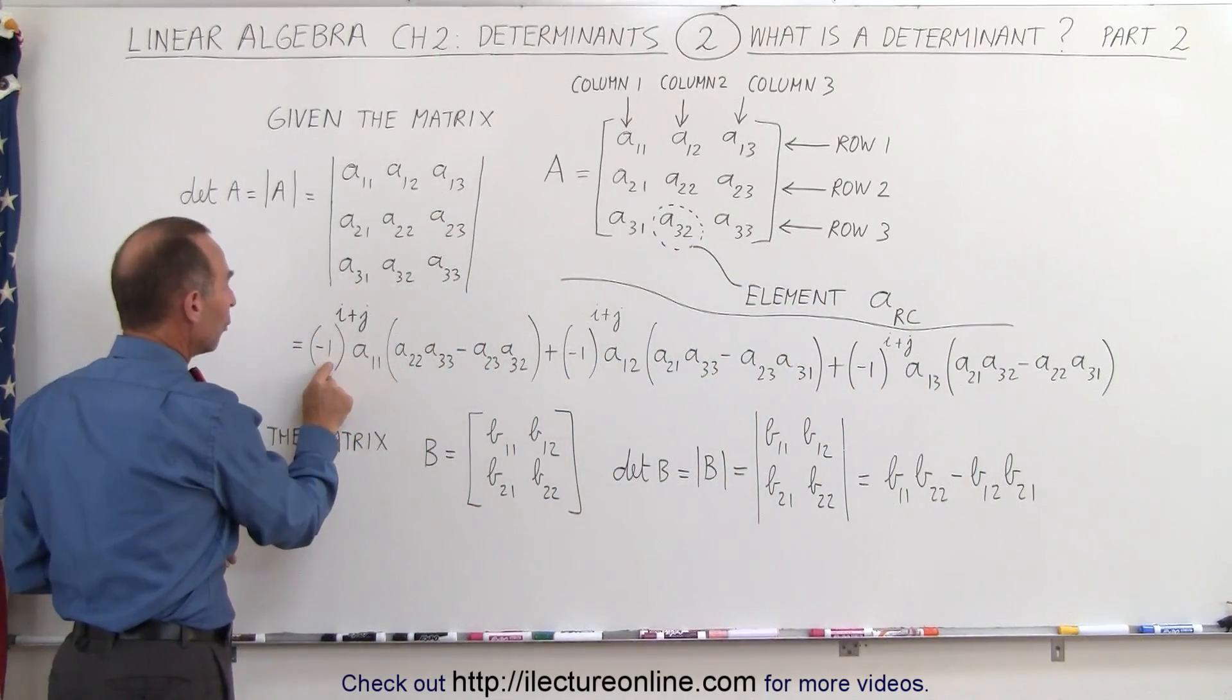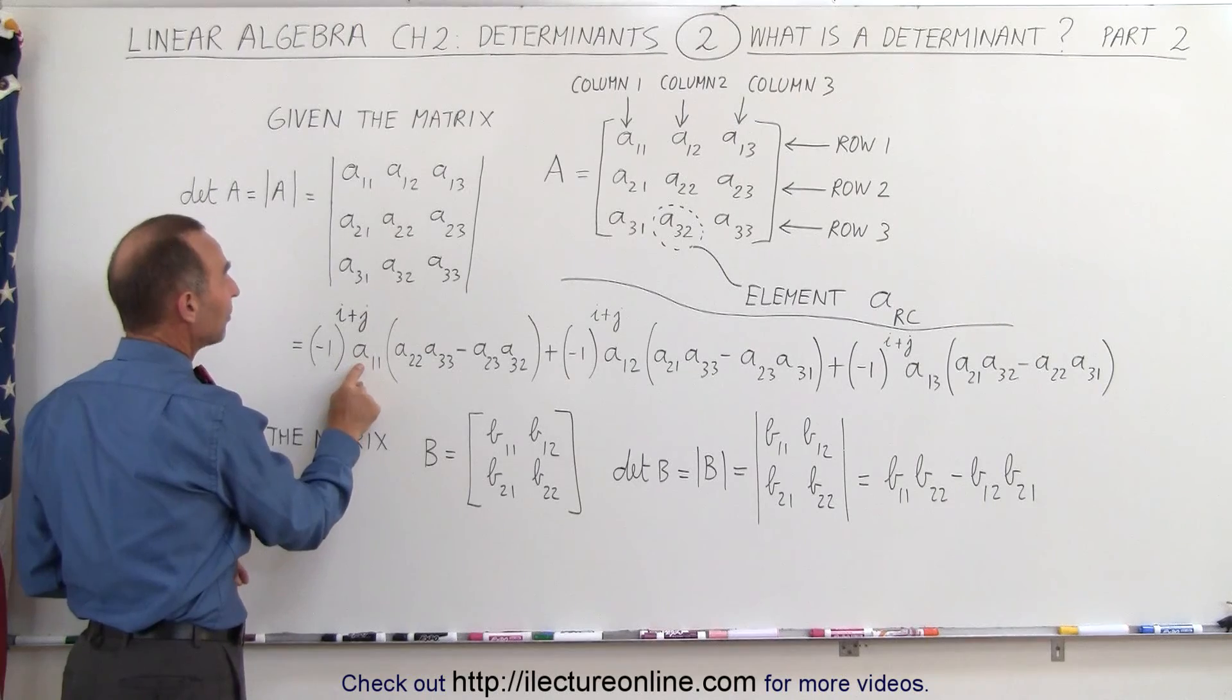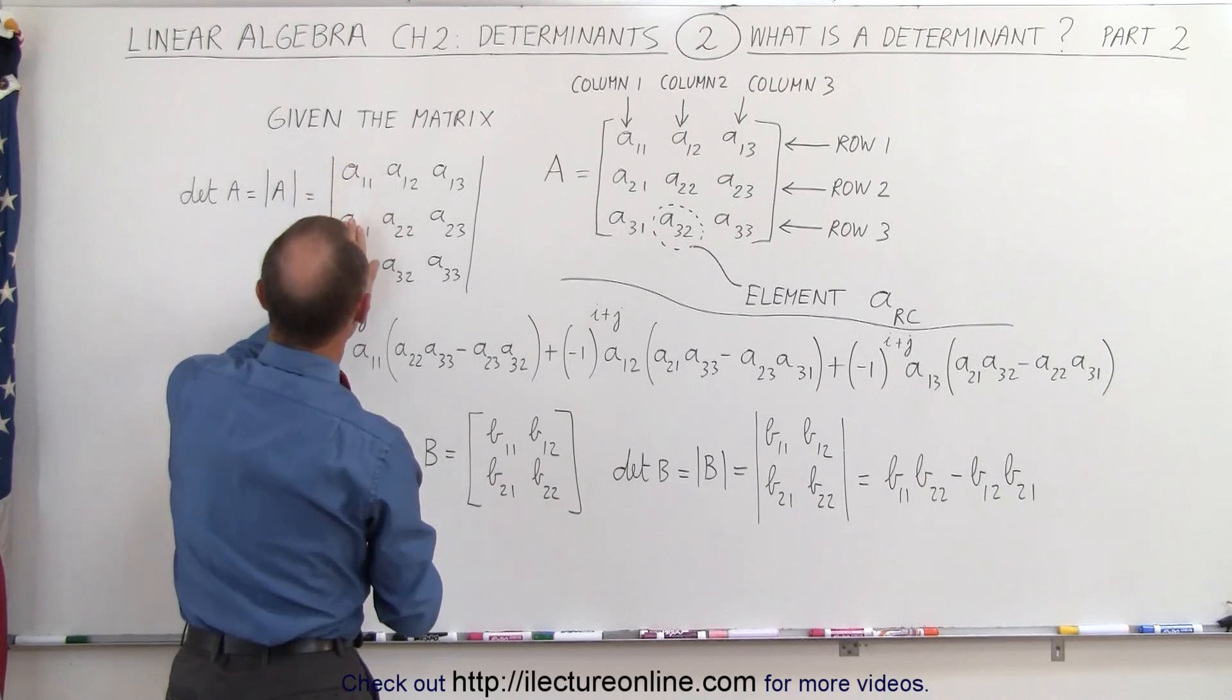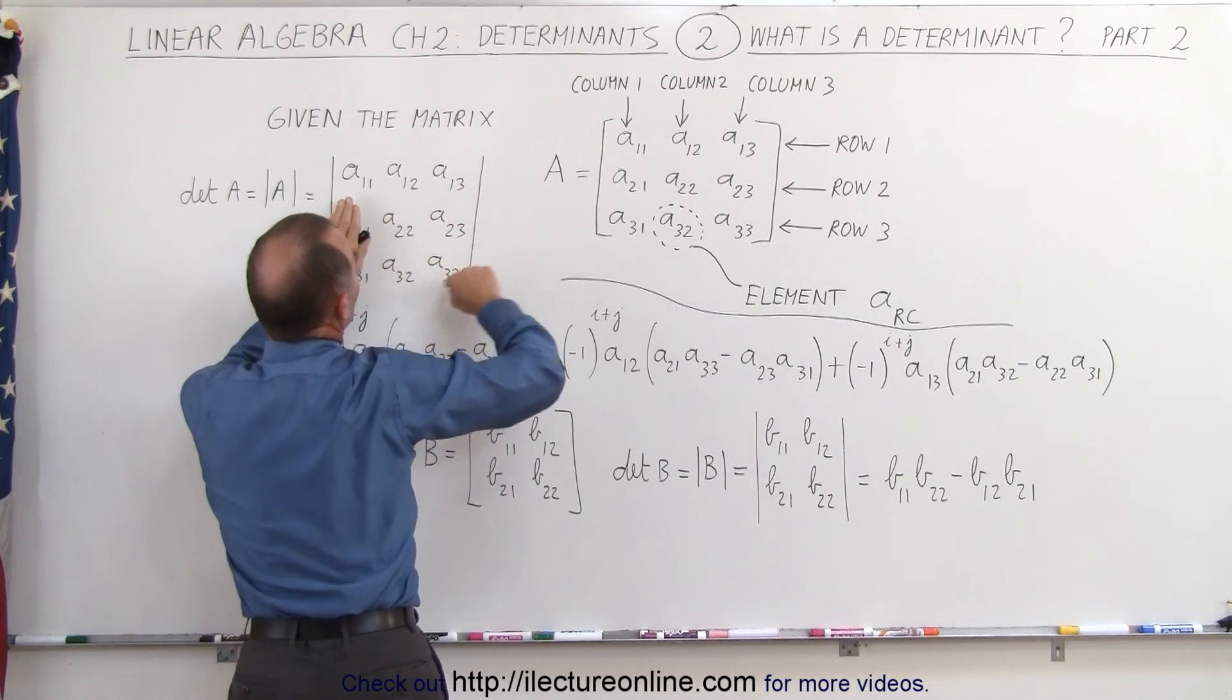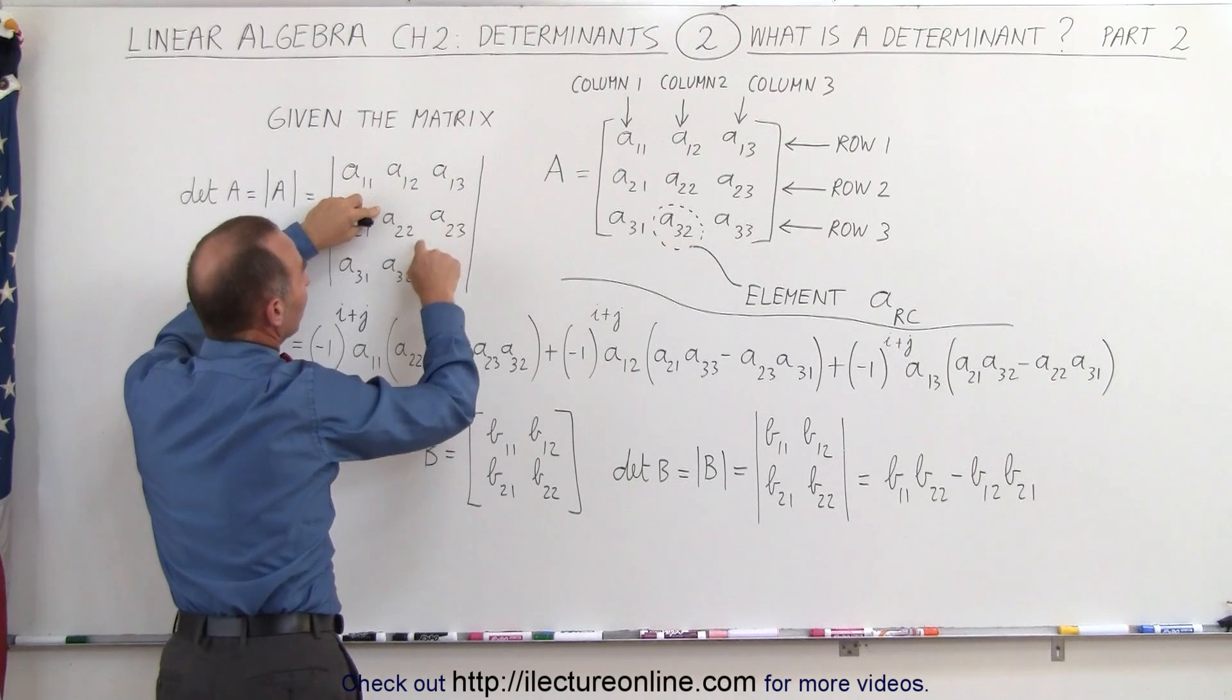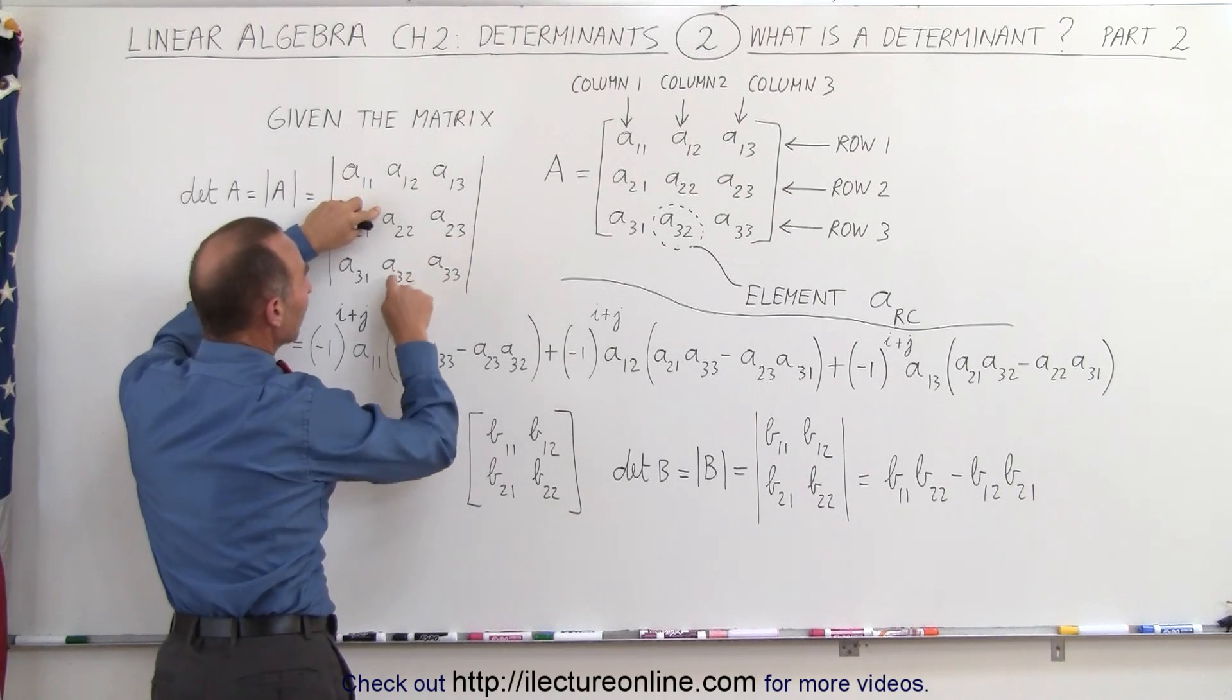And so we take negative 1 raised to the 1 plus 1, that's an even number, so this becomes positive. So it's positive 1 times A11 times what's left in the determinant. What that means is you're going to get rid of that column, column 1, get rid of row 1, and then all you have left is these four elements right here. And then you multiply these two together, the diagonals together, and then subtract from that when you multiply those two together. So it's A22 times A33 minus A23 times A32.